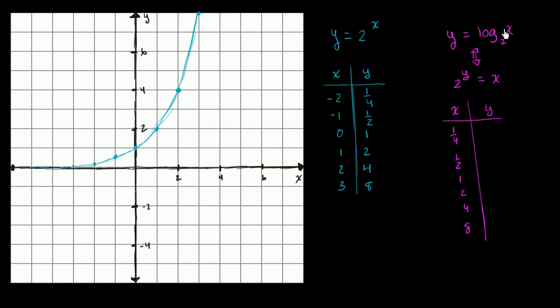So here now we're saying if x is 1 fourth, what power do we have to raise 2 to to get to 1 fourth? We have to raise it to the negative 2 power. 2 to the negative 1 power is equal to 1 half. 2 to the 0 power is equal to 1. 2 to the first power is equal to 2. 2 to the second power is equal to 4. 2 to the third power is equal to 8. Notice, all we did is we essentially swapped these two columns.